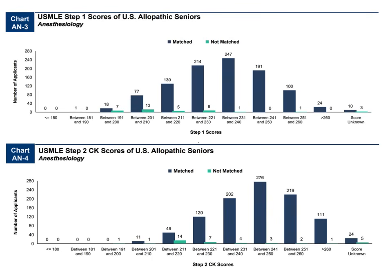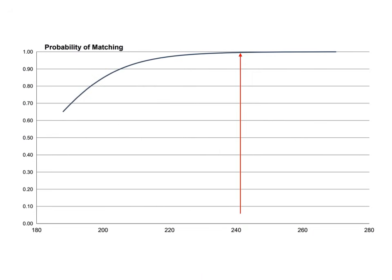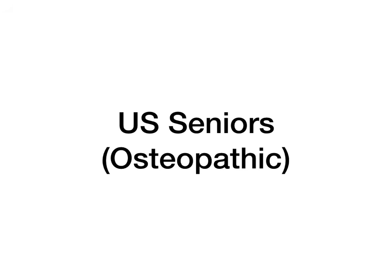For USMLE Step 2, most people have the most success scoring between 241 and 250. But still, 49 USMD seniors matched even having scored between 211 and 220 on Step 2. Normally everyone's score goes up on Step 2, so if you're setting a goal, aim for 240 or higher. For Step 1 probability of matching: if you break a 240, you have a 100% chance of matching into anesthesiology. Your goal for a 100% chance should be 240 or higher, and your comfortable baseline goal should be 230 or higher. That wraps up USMD seniors.